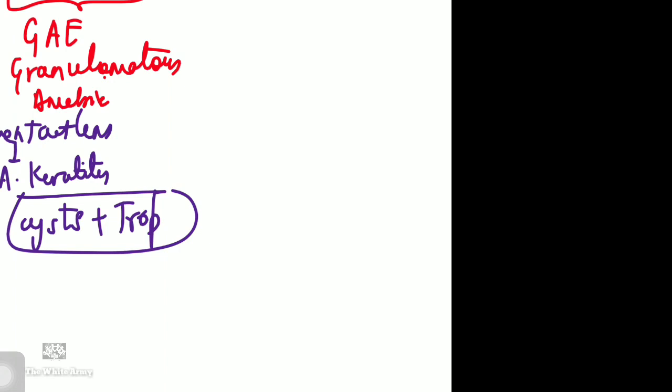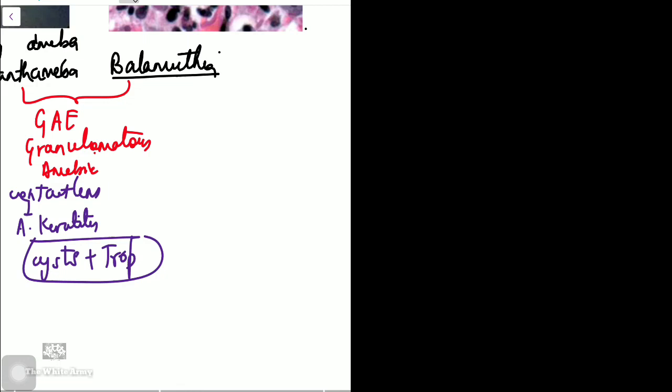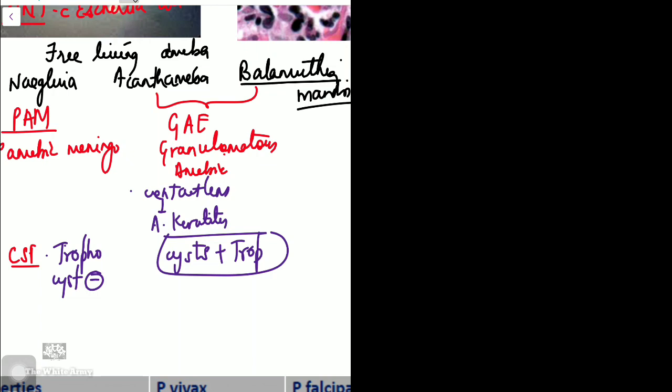Balamuthia is named after scientist Balamuth and was discovered in the mandrill monkey, giving its full name Balamuthia mandrillaris. All these free-living amoeba have a poor prognosis.